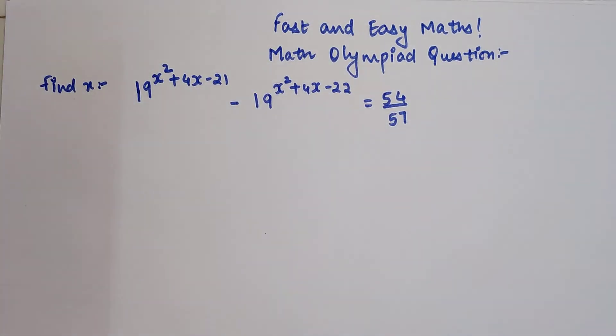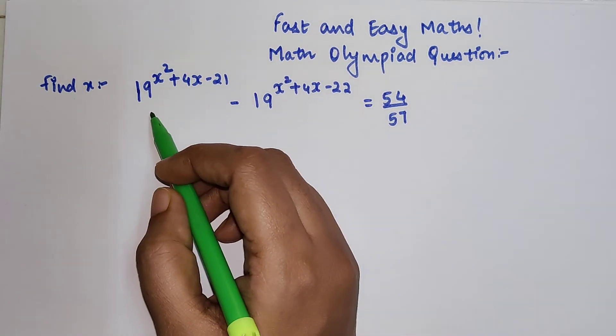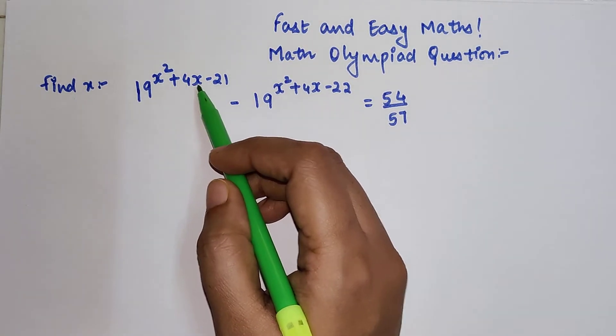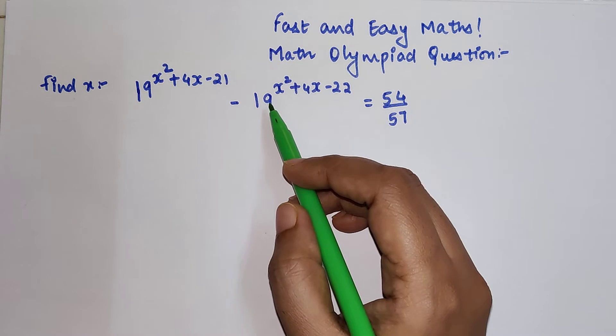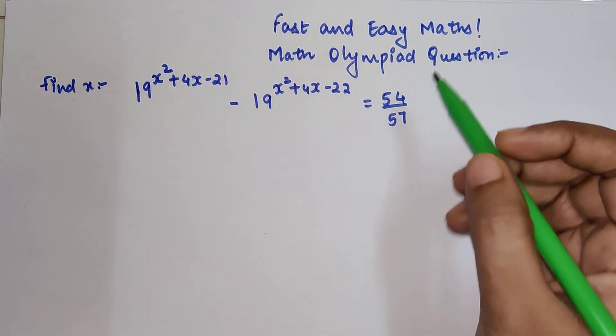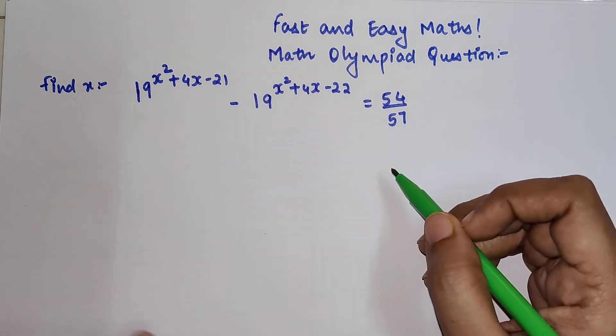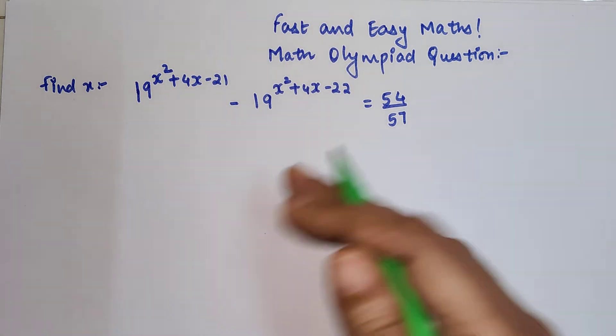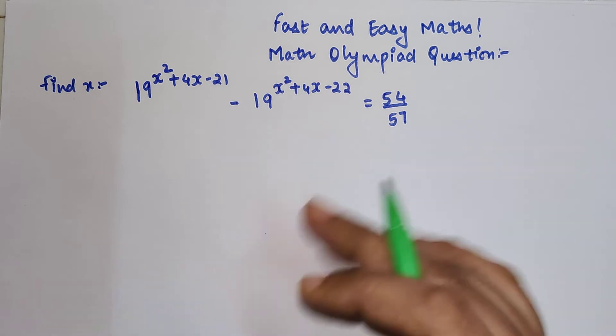We need to find x where 19^(x²+4x-21) - 19^(x²+4x-22) = 54/57. Now, please understand this looks a bit complicated, so we will start with very basic steps.